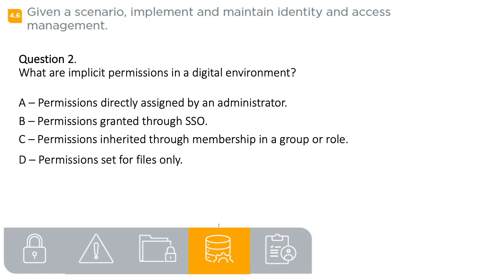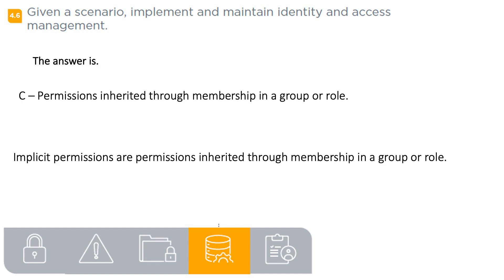Question 2. What are implicit permissions in a digital environment? A. Permissions directly assigned by an administrator. B. Permissions granted through SSO. C. Permissions inherited through membership in a group or role. D. Permissions set for files only. The answer is C: permissions inherited through membership in a group or role. Implicit permissions are permissions inherited through membership in a group or role.